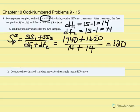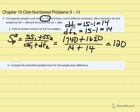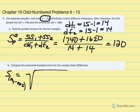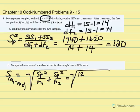Now we can move on to part B, which says compute the estimated standard error of the sample mean difference. The formula is: s sub m1 minus m2 equals the square root of pooled variance over n1 plus pooled variance over n2. Replacing variables, we have pooled variance equal to 120, n1 equal to 15, and pooled variance over n2 is also 15.